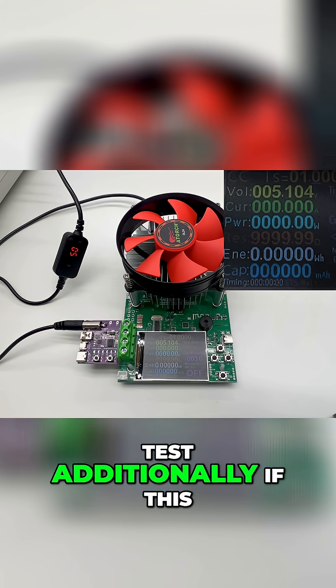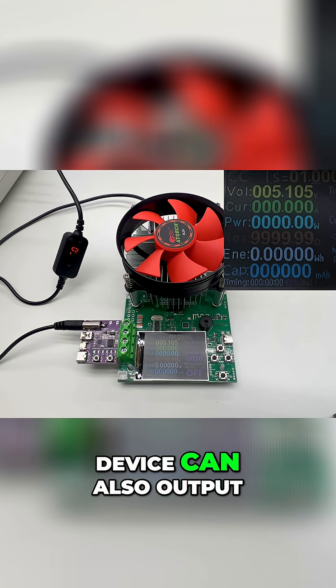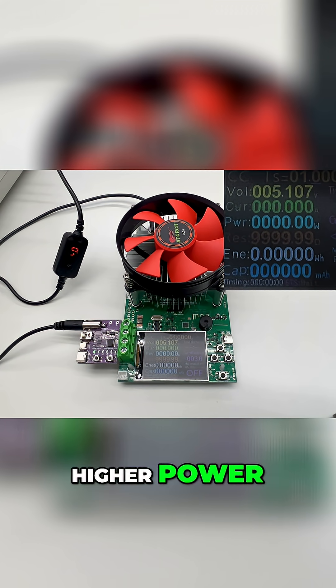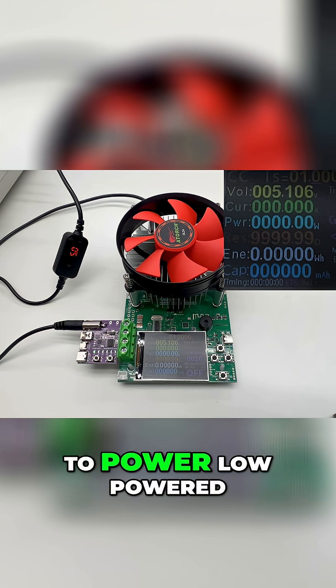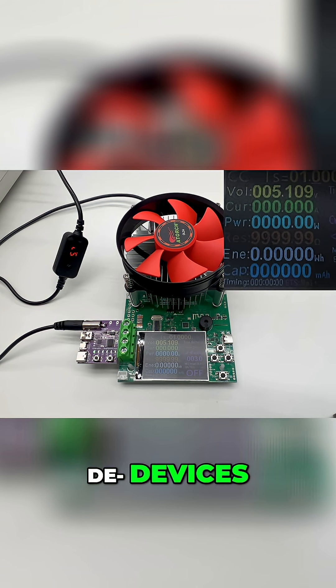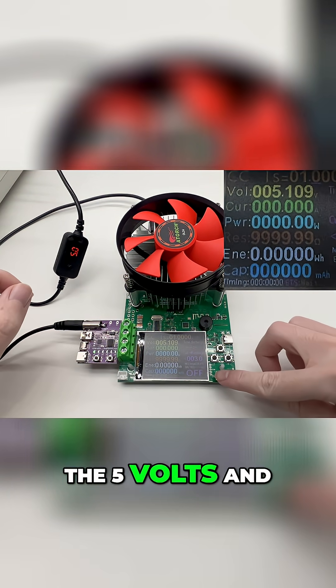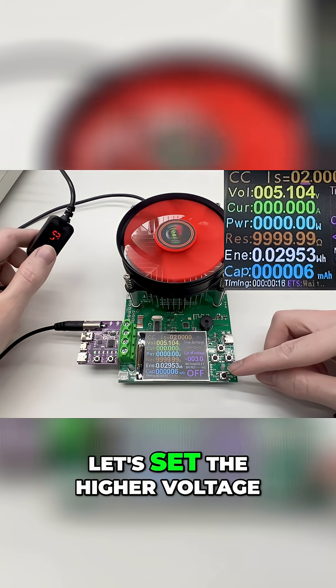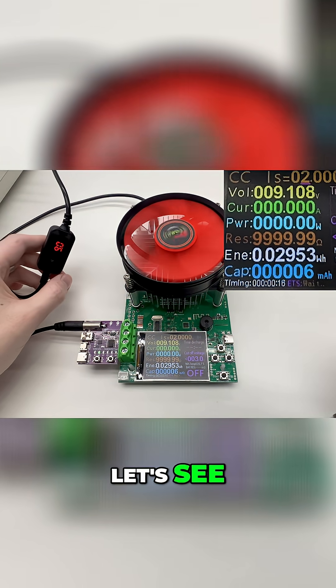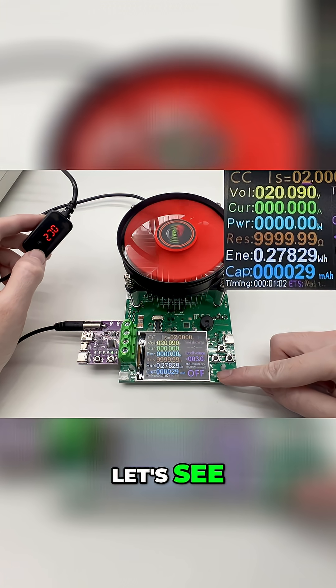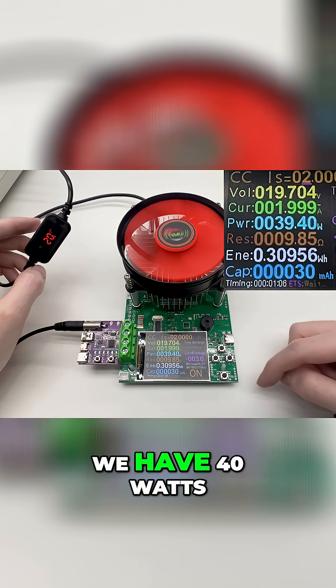I'm going to test additionally if this device can also output higher power or is only able to power low power devices. So let's start with 5 volts and 1 amp. Let's set a higher voltage. Let's see 9 volts. Let's see 20 volts. We have 40 watts.